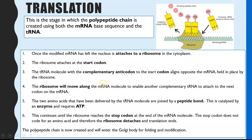The ribosome then moves along, and the next mRNA codon aligns with a complementary tRNA anticodon. The ribosome can hold about two tRNA molecules at a time. With two tRNA molecules aligned opposite their complementary codons, the two amino acids at the top of the tRNA molecules join together — this is where the peptide bond is created. To create that peptide bond there must be an enzyme, and it also requires ATP. This is why protein synthesis requires energy.